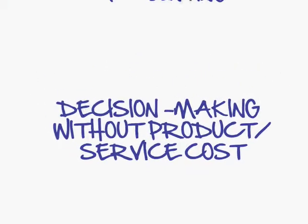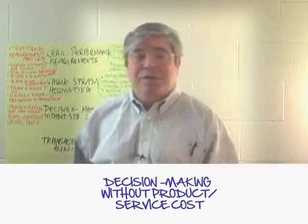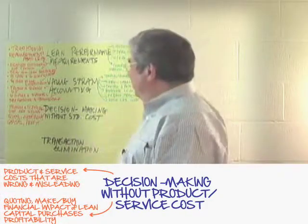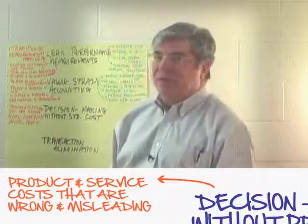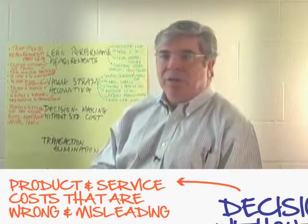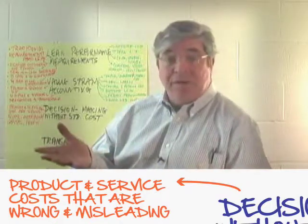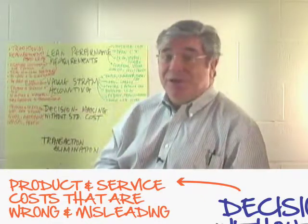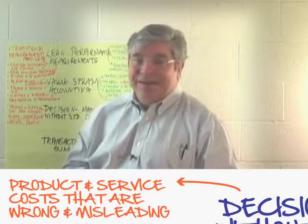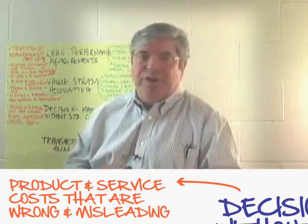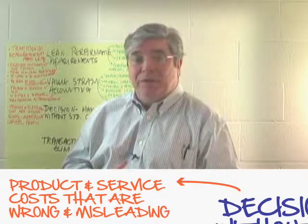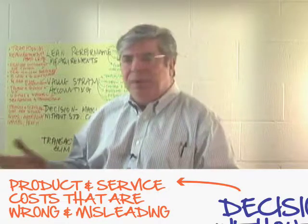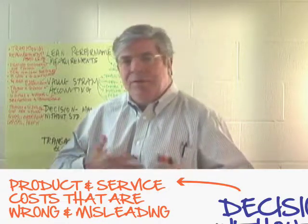The answer is we do it properly. Those product and service costs are just plain wrong. So if you're going to say, how do we price the product — we'll add up material cost, labor cost, overhead, and then add in a margin to give us a price — that's going to be seriously misleading, and yet it's widespread across many companies and many industries. The actual calculation of the cost is not correct.